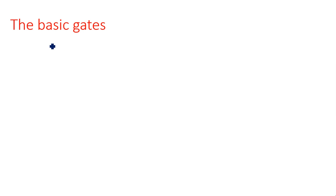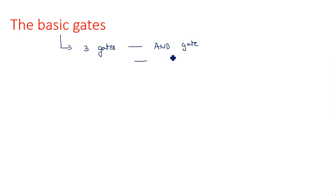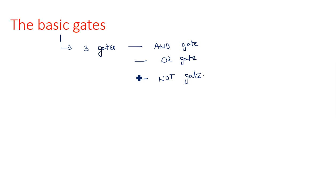The three basic gates — AND gate, OR gate, and NOT gate — can be used to realize any type of logic function, regardless of its size. That's why they are known as basic gates. Now, universal gates: there are two universal gates.